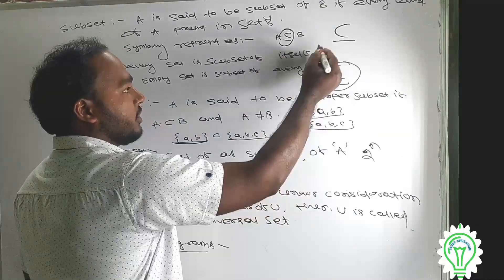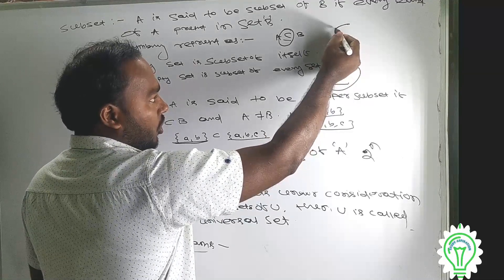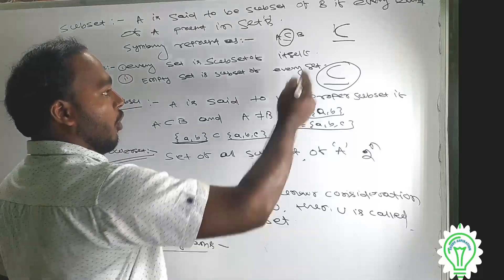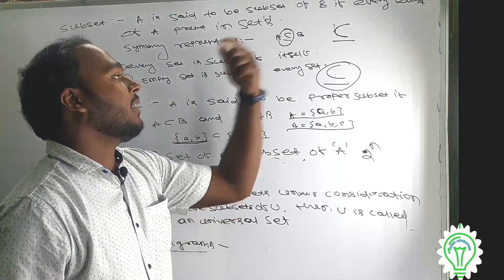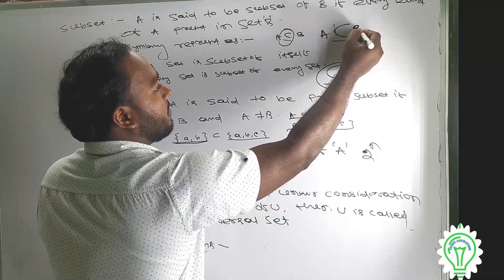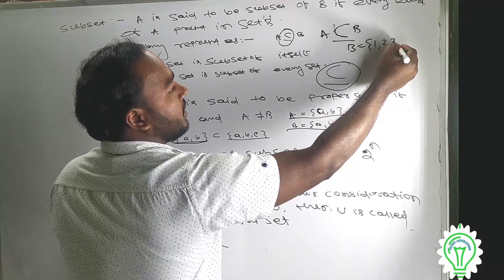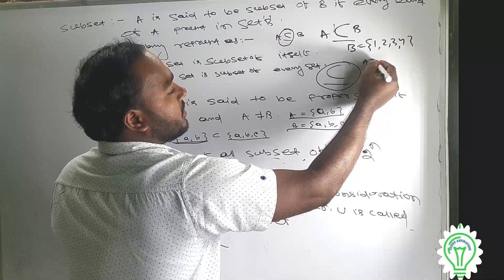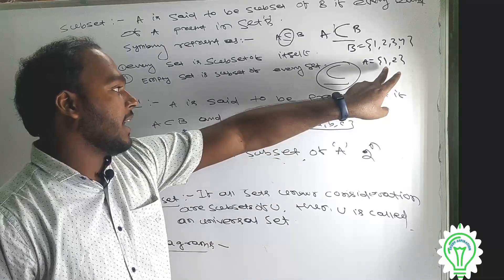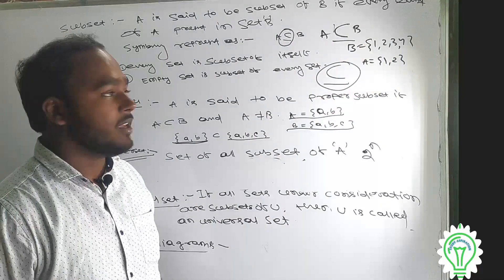If we put A as a subset, then we have a closed symbol for a subset. And if we have an open symbol, then we have A as a subset of B. If we put A as a subset of B, then A is a subset of B, and we will have A as a subset of B.